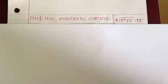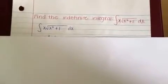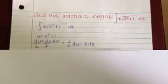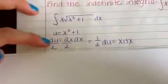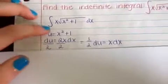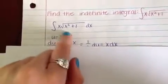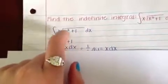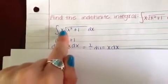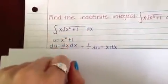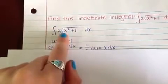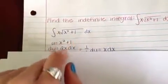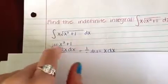So first, write down the problem. First, we have to find u and our du's. To find the u, you take the biggest part or the stuff that has most stuff in the equation or something that's under square root or that's being squared. So since there's a square root here, we're going to take x squared plus 1 as our u.